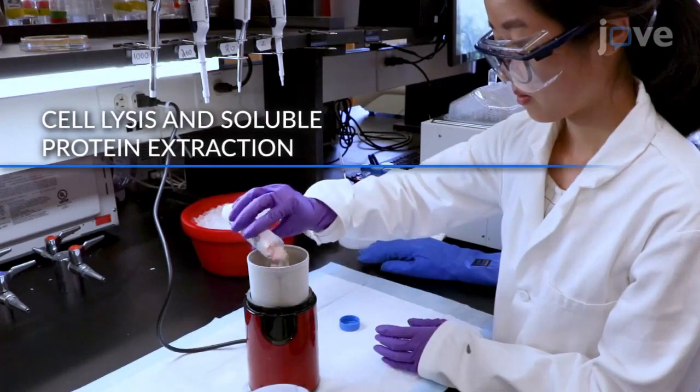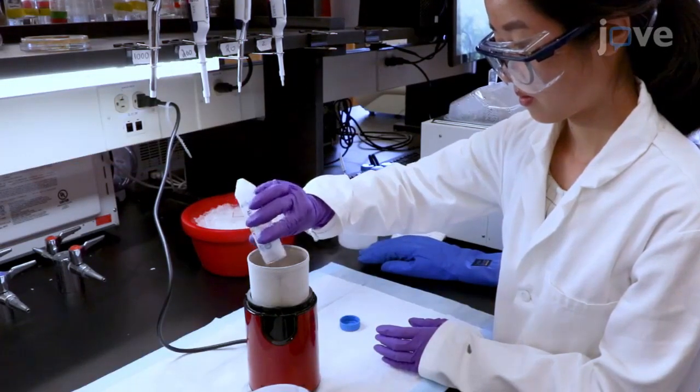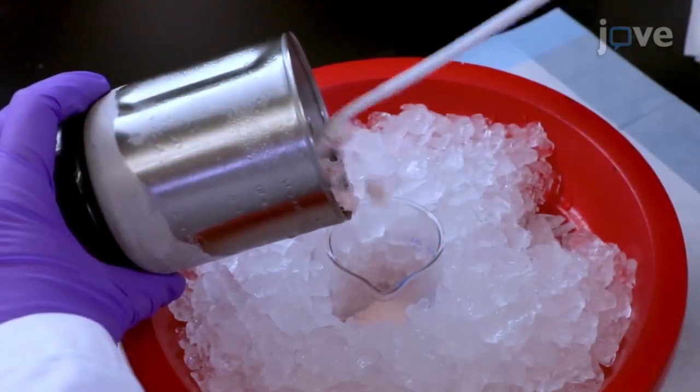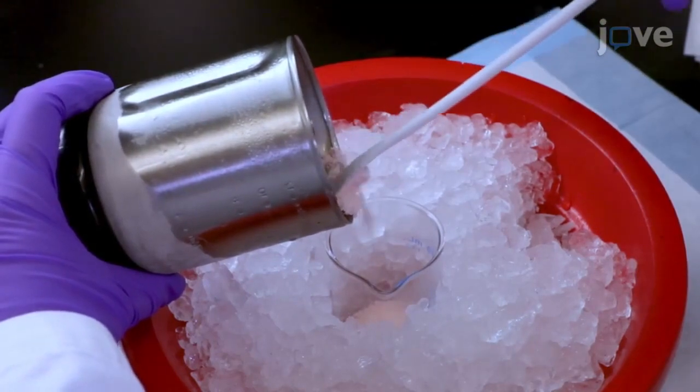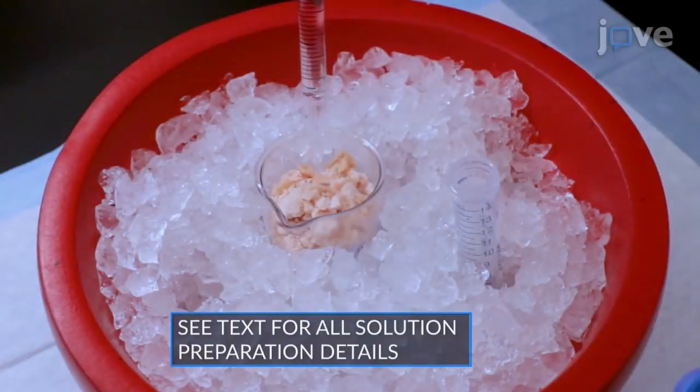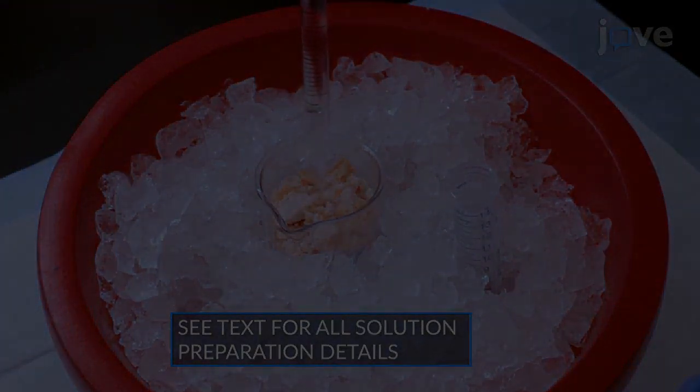For motor protein purification, use a blade type coffee grinder pre-chilled with liquid nitrogen to grind the frozen yeast pellets into a fine powder and transfer the yeast powder into a pre-chilled 100 milliliter glass beaker on ice. Add a small volume of freshly prepared lysis buffer with supplements to the powder.